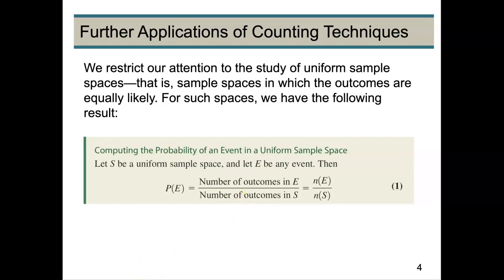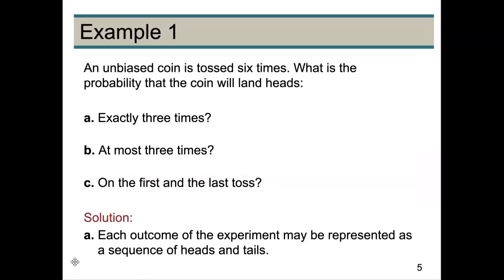Here's an example. We have an unbiased coin and it's tossed six times. We want to know what the probability that the coin will land heads exactly three times. So first thing we need to know is how many possibilities are in our sample space.